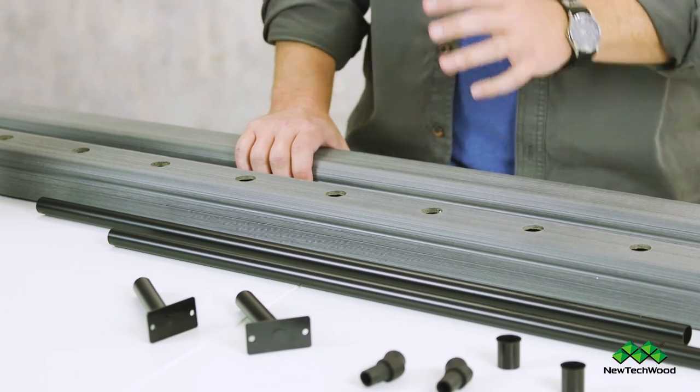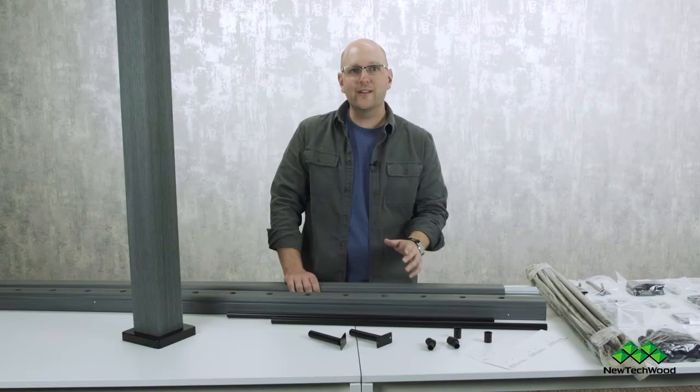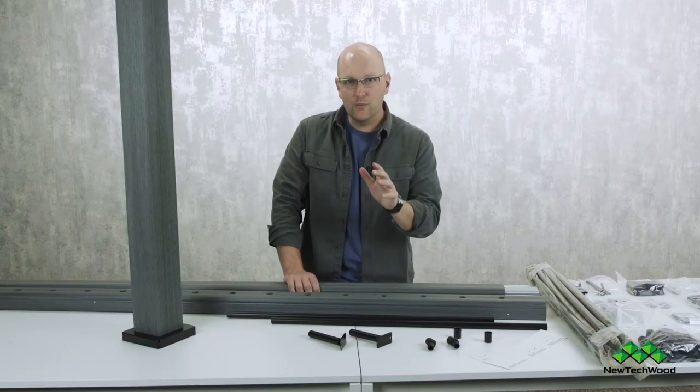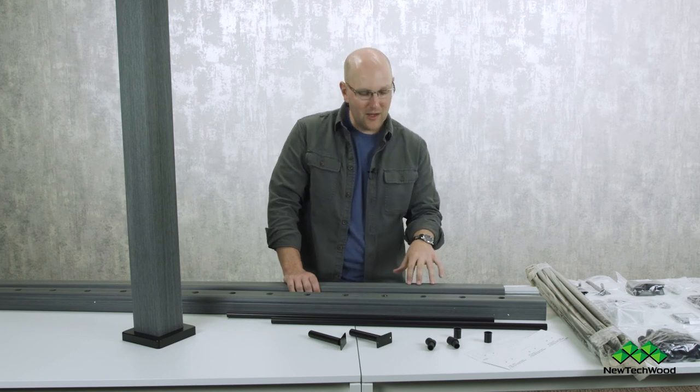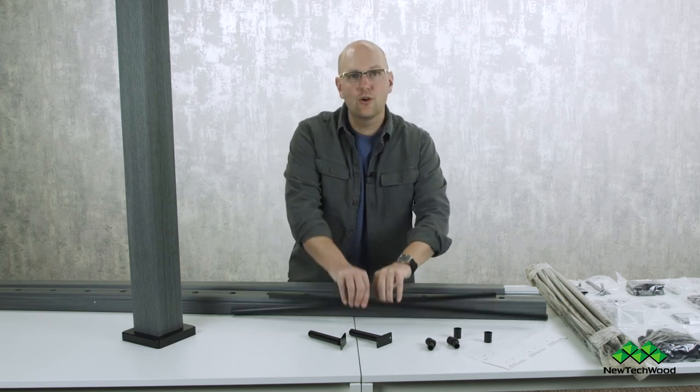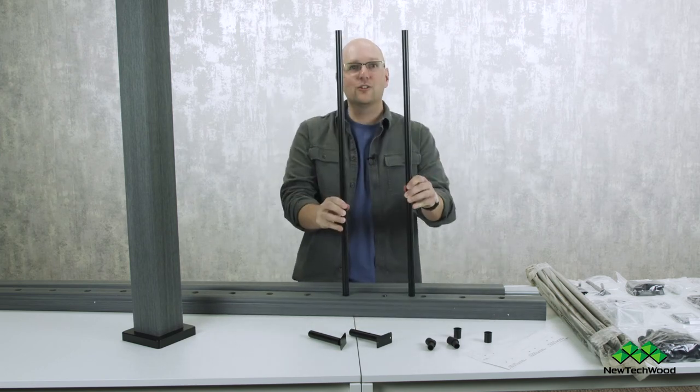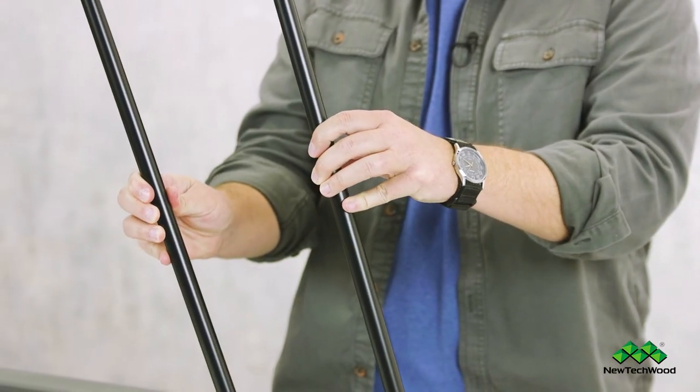Now pro tip here when you do cut your railings to length make sure that your measurements are consistent for the top and bottom rails so your balusters are straight and you don't wind up with a railing that looks like this.